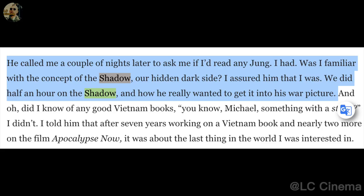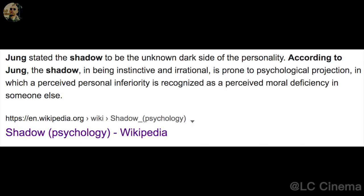According to Kubrick's interview, he likes Jung very much. His co-writer in Full Metal Jacket, Michael Hare, once said: 'He called me a couple of nights later to ask me if I'd read any Jung. I had. Was I familiar with the concept of The Shadow, or Hidden Dark Side? I assured him that I was. We did half an hour on The Shadow and how he really wanted to get it into his war picture.' Jung's concept of The Shadow — defined as the unknown dark side of the personality — is prone to psychological projection, in which a perceived personal inferiority is recognized as a perceived moral deficiency in someone else.